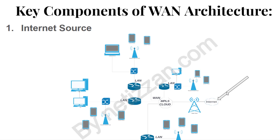The first component I'm going to cover is the internet source. As you can see, this cloud symbol is representing an internet source. This internet source represents the Internet Service Provider that is offering service to any enterprise that is having their Wide Area Network. So as an enterprise, you need to get your service from an Internet Service Provider. I've represented the ISP's architecture with this cloud symbol.